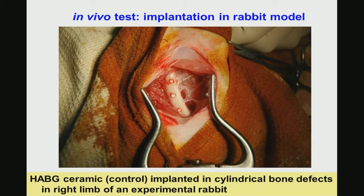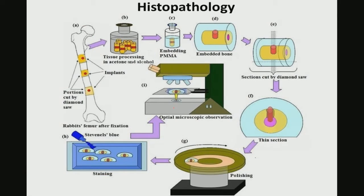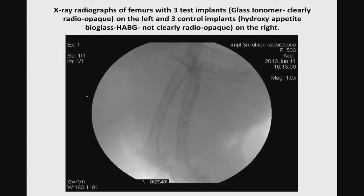The hydroxyapatite bioglass material used as control implant is closely fitted into the femoral defect cavity. After all test implantation is done and the animal is sacrificed, you take the explant and small tissue samples, then do further processing: embedding the bone, cutting sections with a diamond saw, making thin sections, polishing lightly, staining with stiffness blue staining, and then performing fluorescence microscope and optical microscope observation.